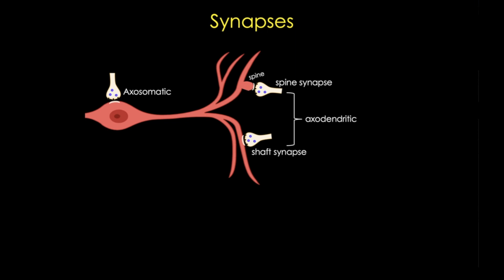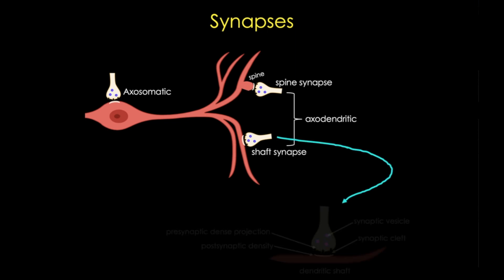Now the general structure is shown here: a presynaptic area or projection, and then there's a postsynaptic area or density, and the space between them is called the synaptic cleft. Signaling generally takes place via the release of chemical messengers into that cleft.